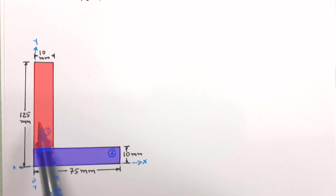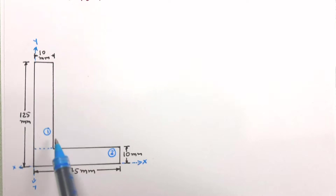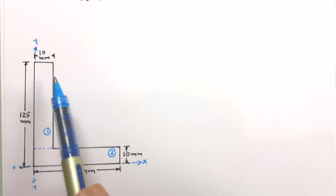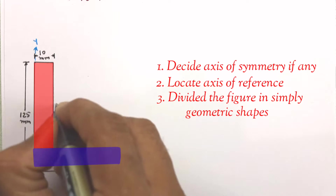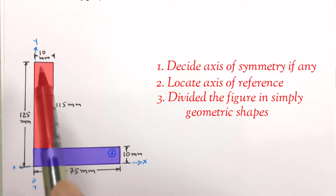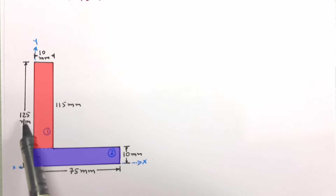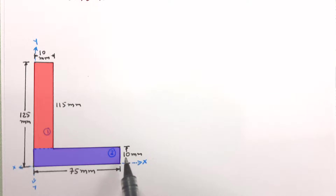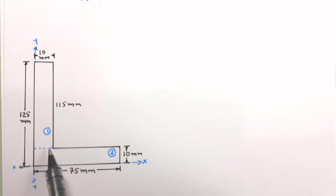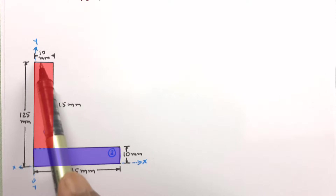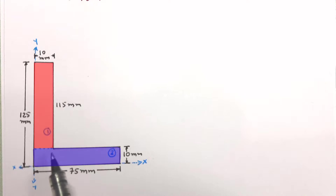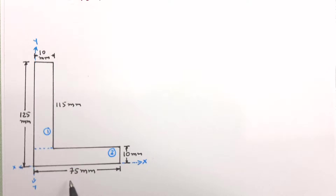Now let us divide the figure into two simple geometrical shapes. The first rectangle has dimensions 115 mm (that is 125 mm minus 10 mm) by 10 mm. The second rectangle has length 75 mm and width 10 mm.